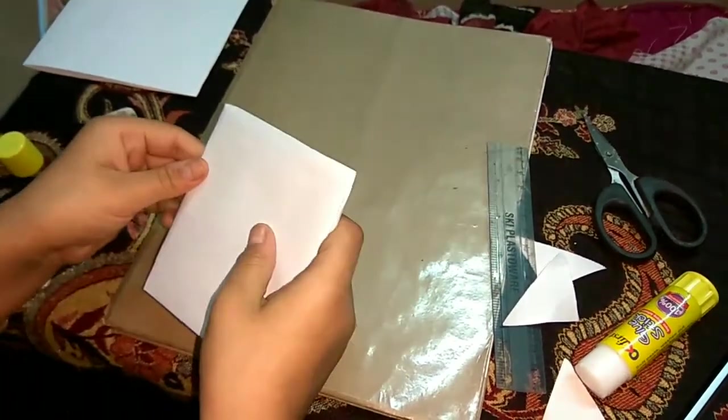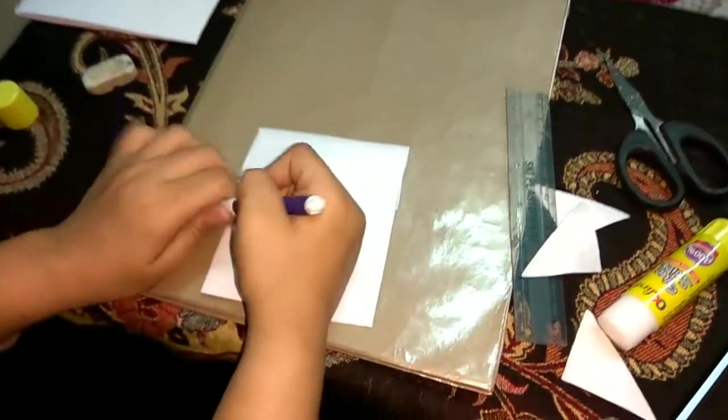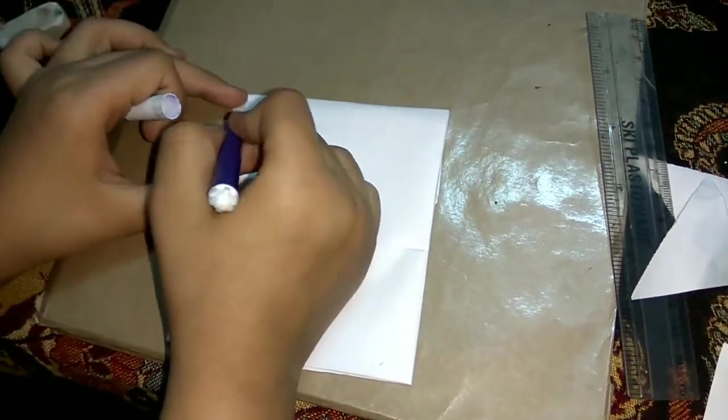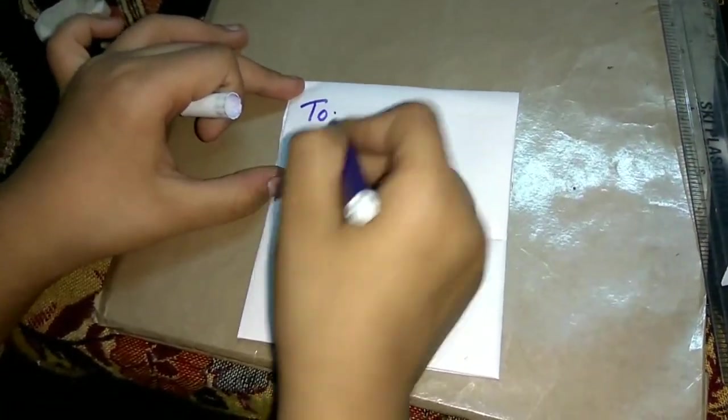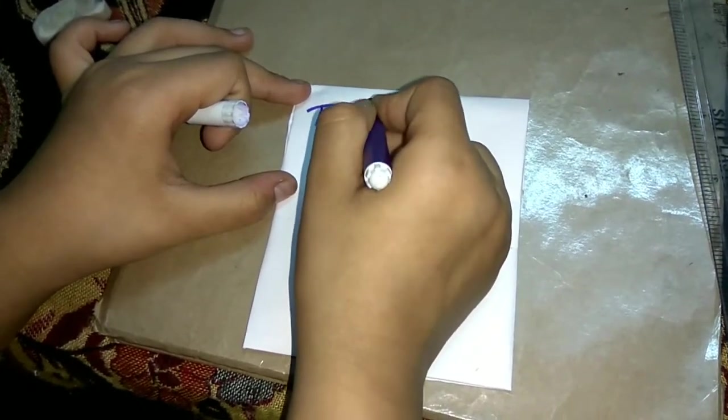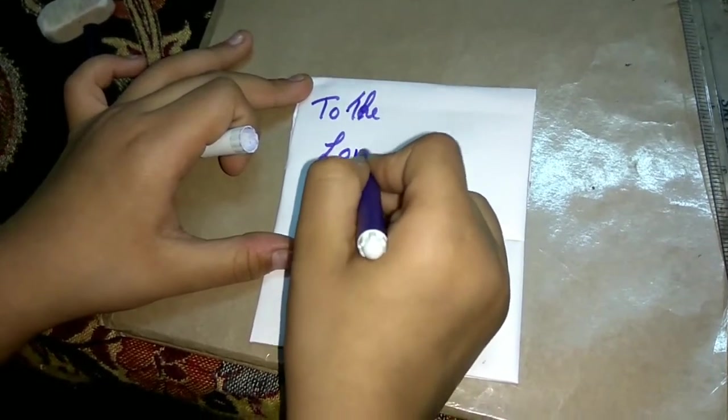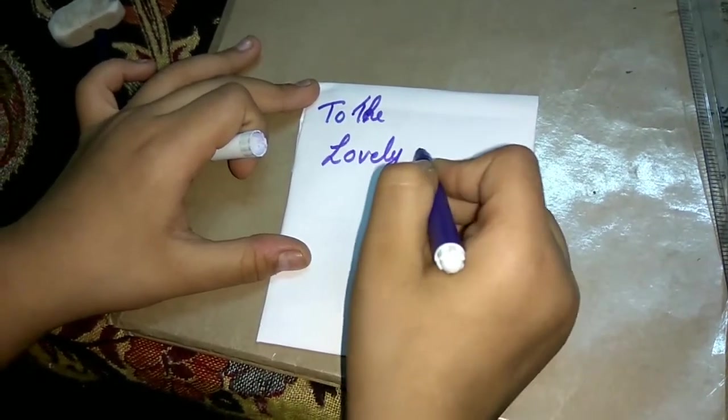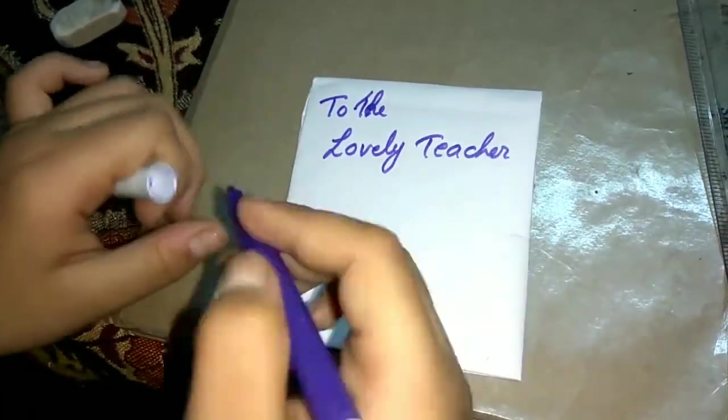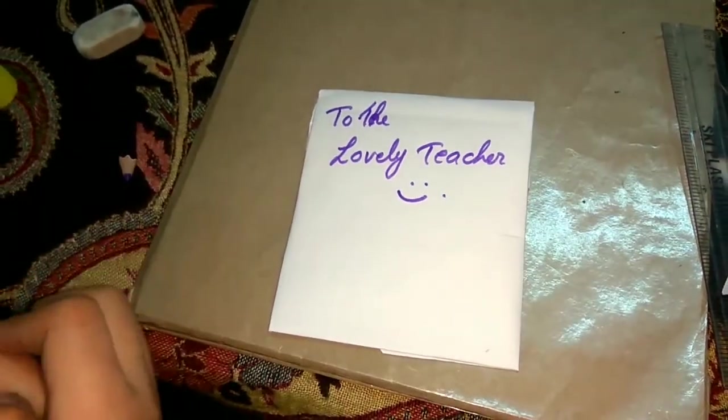We are going to take the card and put it inside. We can fold the upper part down like so, and we're going to write on this side: 'To the lovely teacher.' It's my signature.